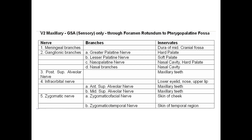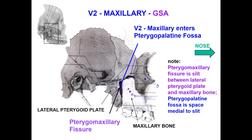The zygomatic branches include the zygomaticofacial nerve to the skin of the cheek, and the zygomaticotemporal nerve for the skin of the temporal region. This is the maxillary nerve — general sensation only. The maxillary nerve enters the pterygopalatine fossa.